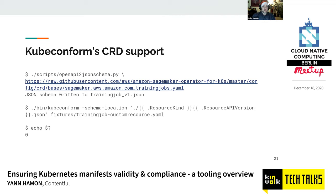Here's what CRD support looks like in KubeConform. Most custom resources and operators provide an OpenAPI schema. I wrote a tool to convert that schema to JSON schema. For example, I download the OpenAPI schema for a SageMaker resource from an AWS operator, convert it to JSON, then run KubeConform with a `--schema-location` flag — a template telling it where to find the schema for a particular resource — and validate a training job custom resource. You convert all your OpenAPI schemas to JSON schema, put them in a folder, and add that to KubeConform's schema locations.